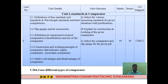The second unit is Standards and Comparators. Basically, this unit is divided into two parts: first, Standards, and second, Comparators. Topic 2.1 is the definition of line standard, end standard, and wavelength standard — how these standards are used in the engineering field.